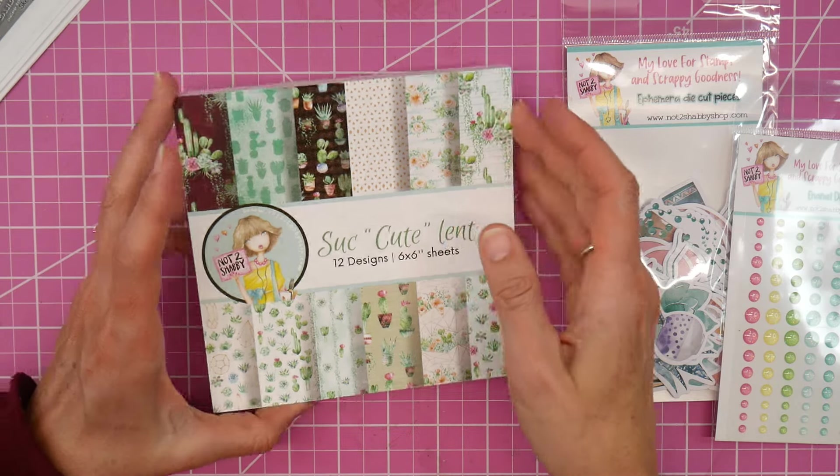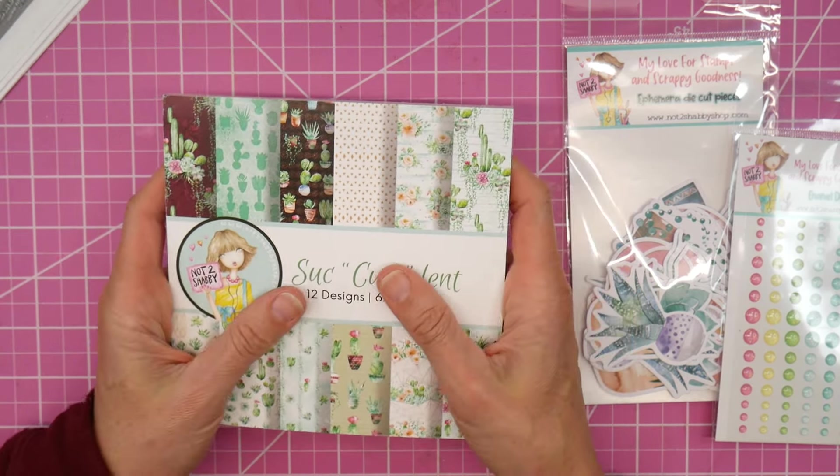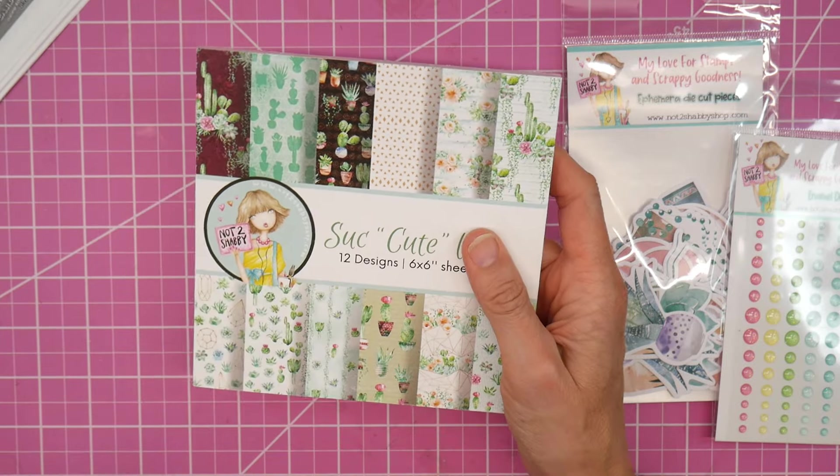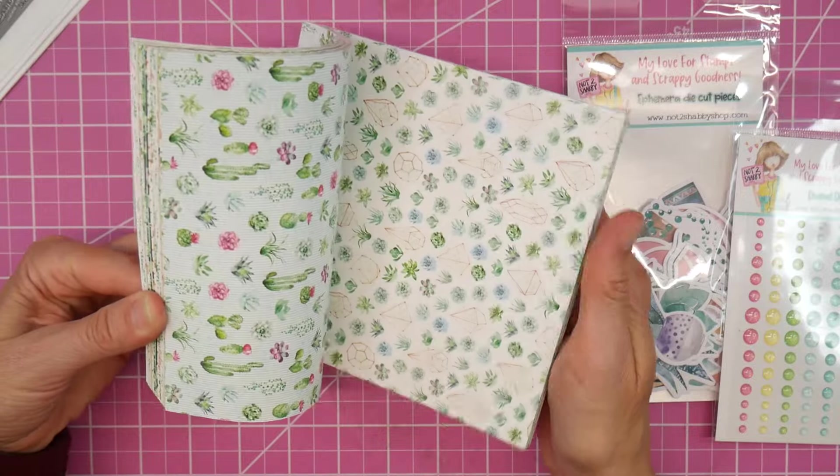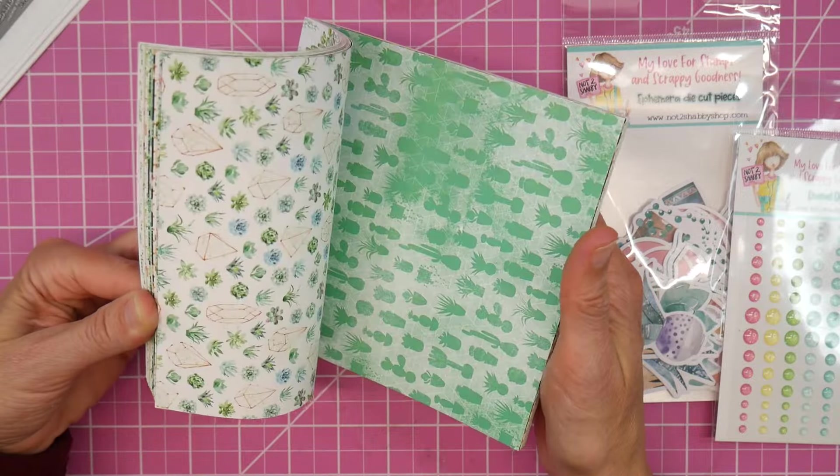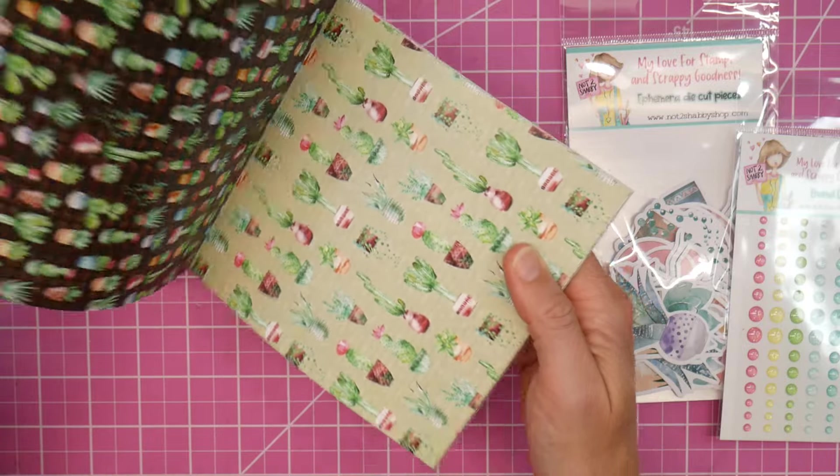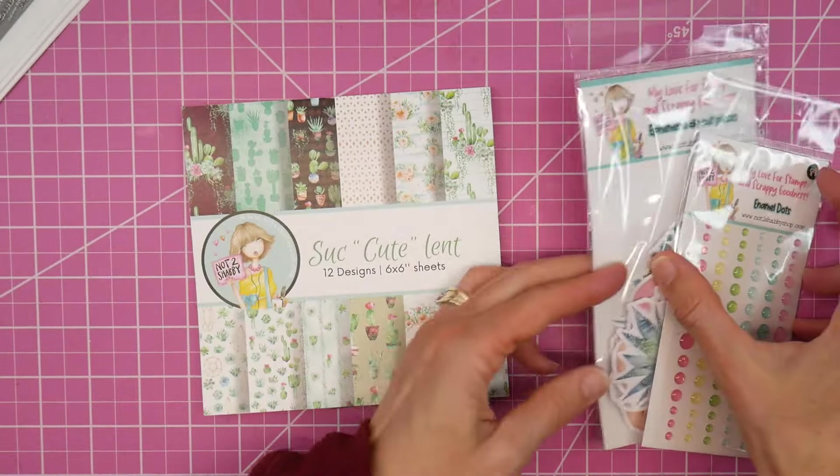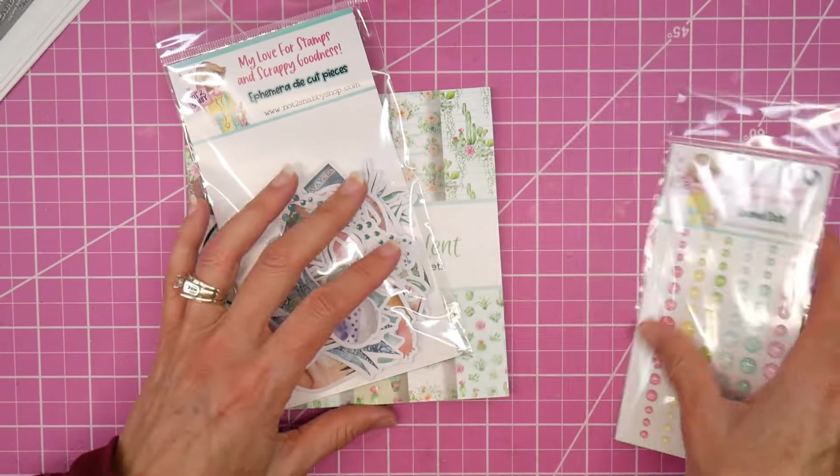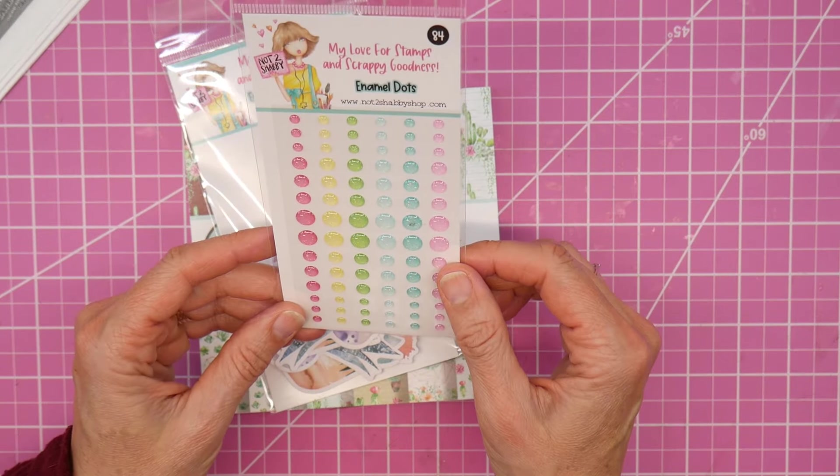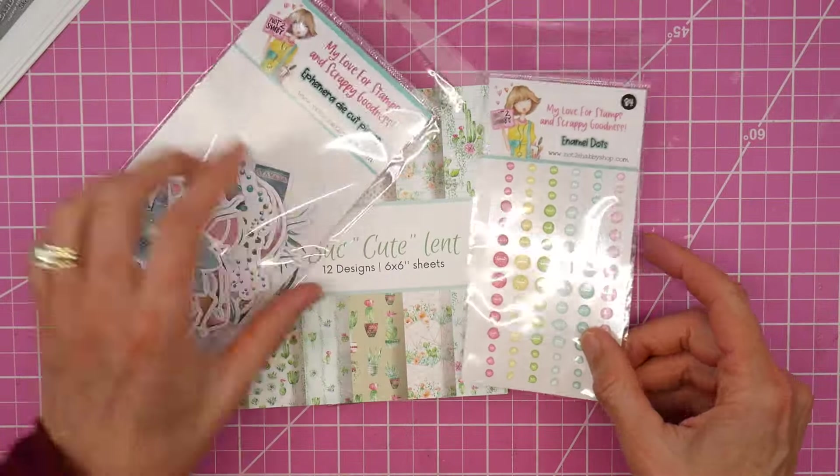Some of the Kendra's Card Challenge collaboration team members are participating in today. I am working with the succulent six by six pad from Not Too Shabby. I thought it was so cute, just a lot of cacti and succulents. I have the coordinating ephemera for that and then I also have some enamel dots that I just thought kind of coordinated with some of the colors in the pad.